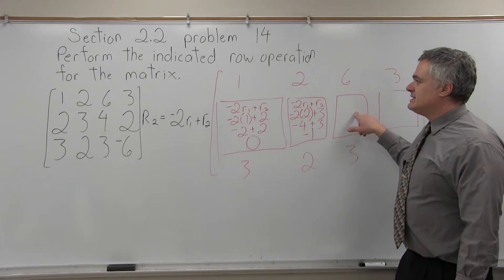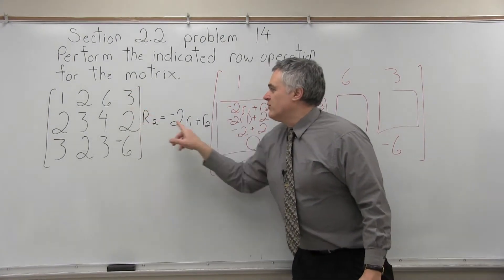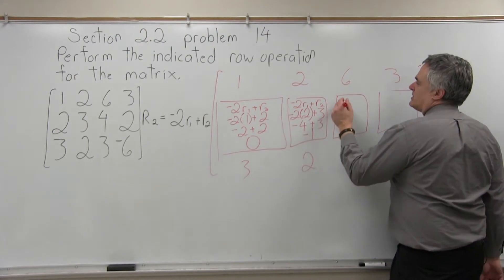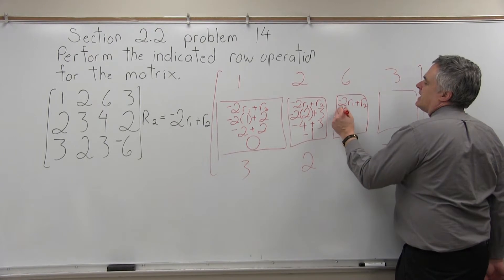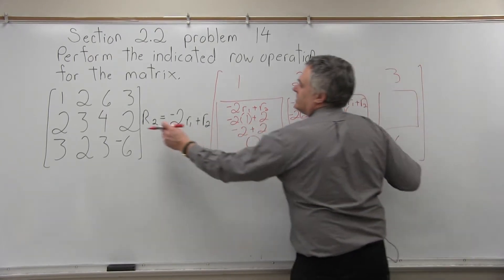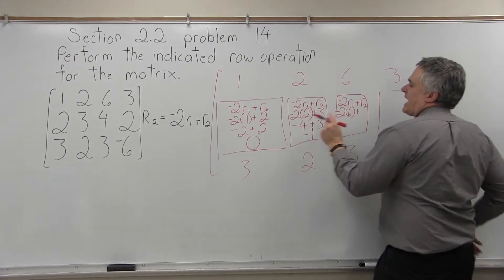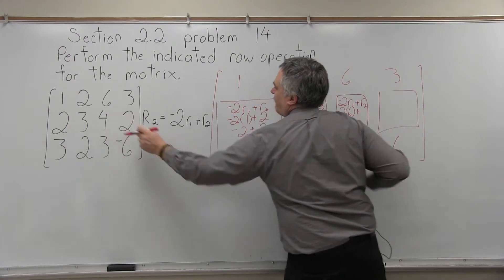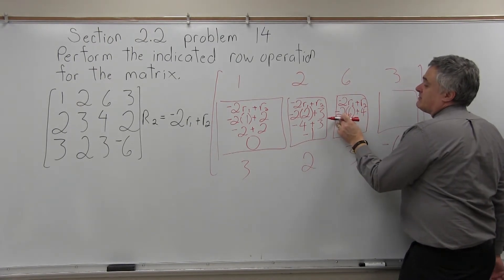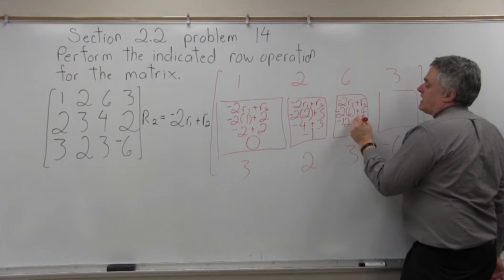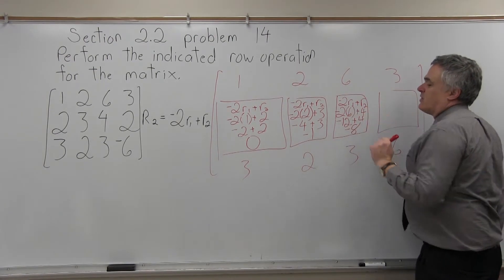The next box is in the z position — same process but with the values 6 and 4. The equation is negative 2 times row 1 plus row 2. Negative 2 times what's in row 1 in this column is negative 2 times 6, and I'm going to add that to row 2, which is 4. So negative 2 times 6 is negative 12, and negative 12 plus 4 is negative 8.